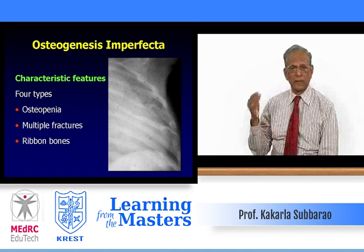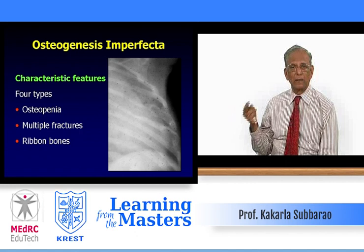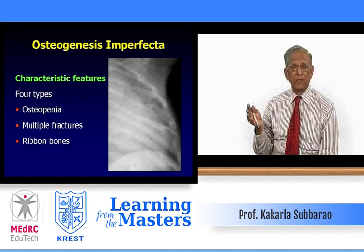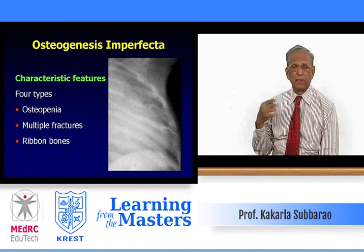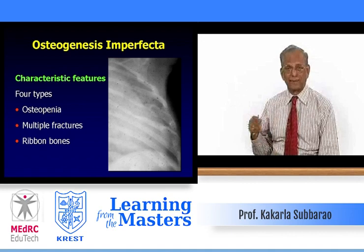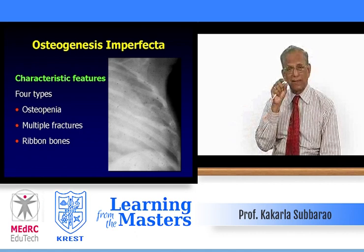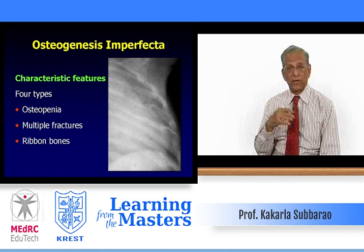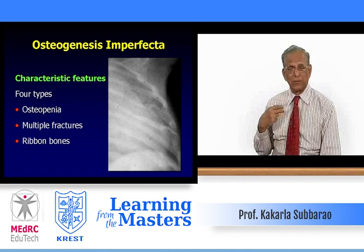Osteogenesis imperfecta comes under the category of lytic lesions of the bone. Although there are four types, the first three are common in children. The first type may be lethal, while osteogenesis imperfecta tarda presents in adolescence or adult life. Characteristic features include osteopenia, gracile bones due to imperfect osteogenesis, multiple fractures, and ribbon-like bones — particularly in the ribs.